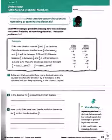Number 1. Erica says that no matter how many decimal places she divides to when she divides 1 by 3, the digit 3 in the quotient will just keep repeating. Is she correct?